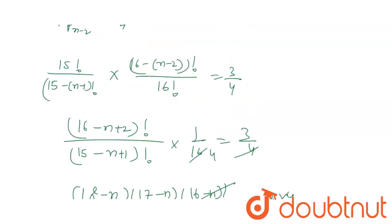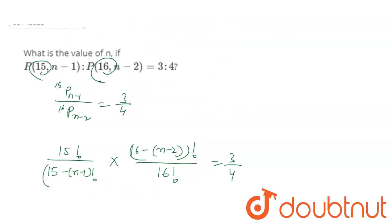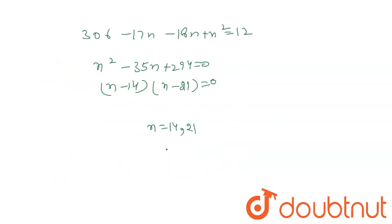But what is the condition? We have a condition that the value of n cannot be more than this base value. Since n cannot be equal to 21, therefore the value of n is 14.